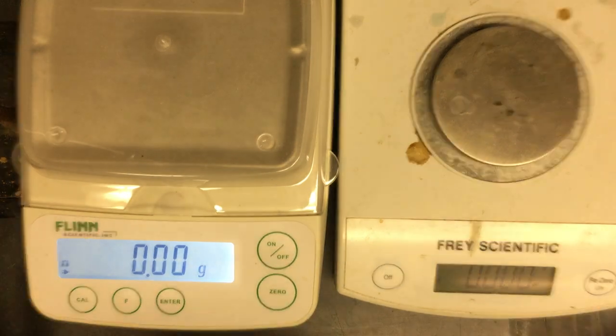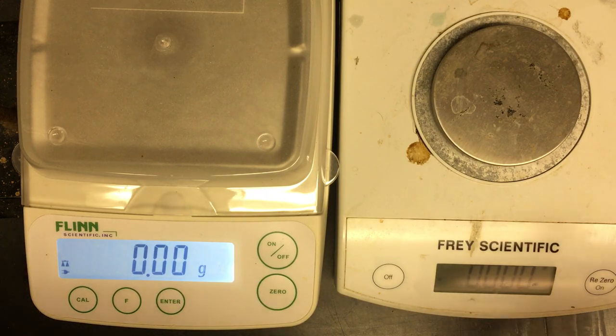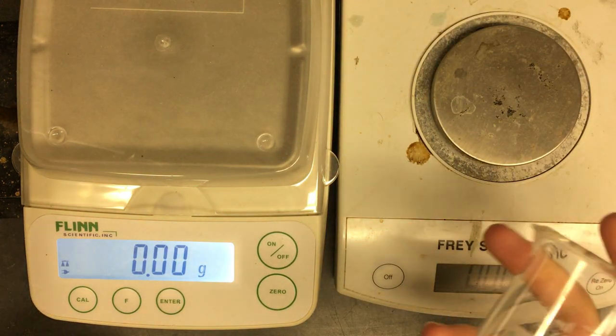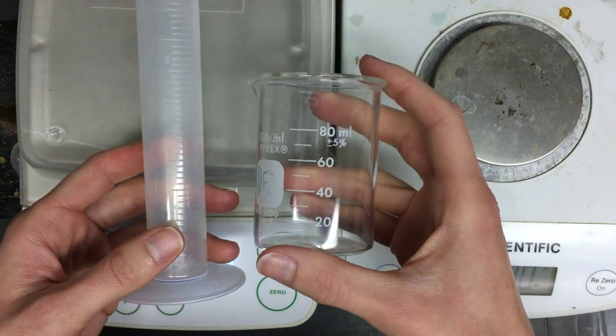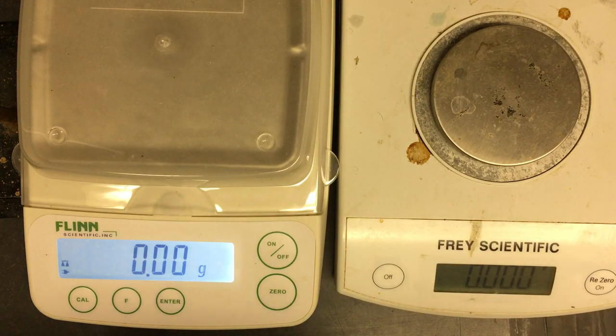Okay, so in this lab we are going to be making measurements and reporting them using the correct number of significant figures. We're going to be using two instruments to measure volume, a graduated cylinder and a beaker, and then two different balances to measure mass.